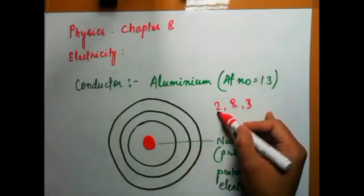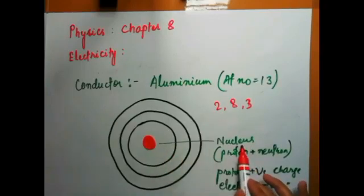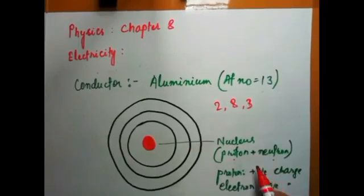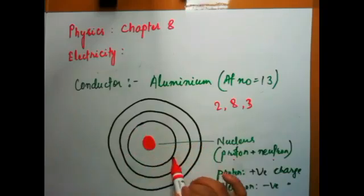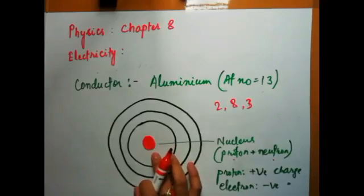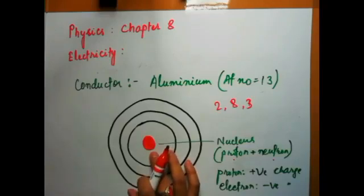The nucleus contains protons and neutrons. Protons carry a positive charge. Electrons are distributed around the nucleus in shells. The nucleus exerts a force, and we can distribute electrons across shells. The nucleus holds the protons and neutrons together.